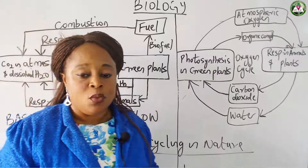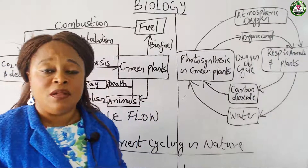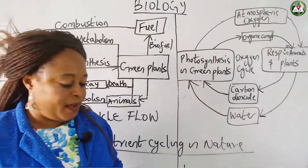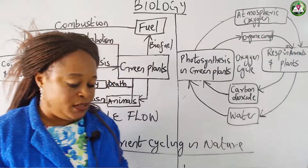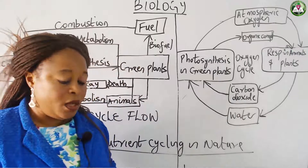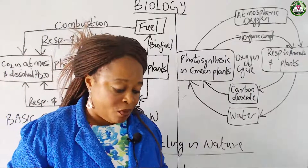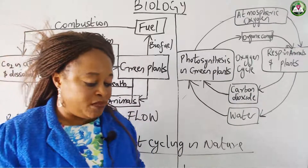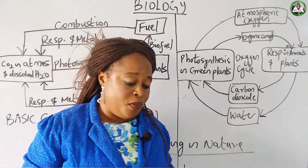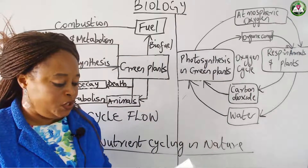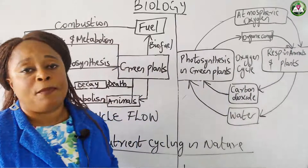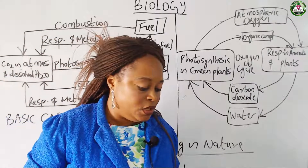Burning of fuel, for example coal and wood, can result in the release of carbon dioxide into the atmosphere. Also, the action of volcanoes — that is volcanic eruptions — results in the release of carbon dioxide into the atmosphere. Respiration in plants and animals also releases carbon dioxide. Death, decay and putrefaction of plants and animals can also release carbon into the atmosphere. Diffusion of carbon dioxide from seas and other water bodies can also cause its release.